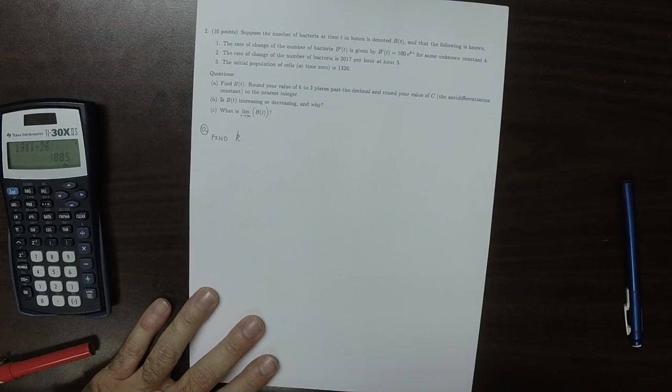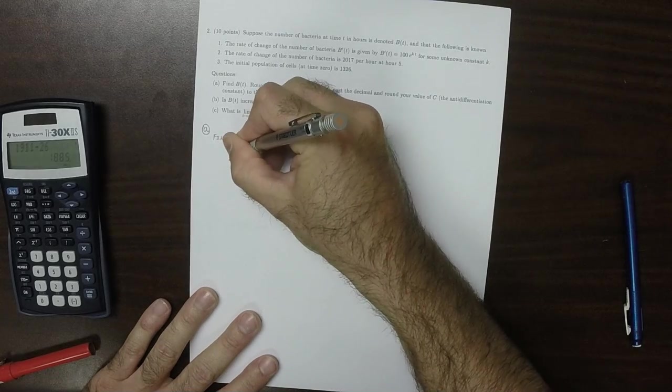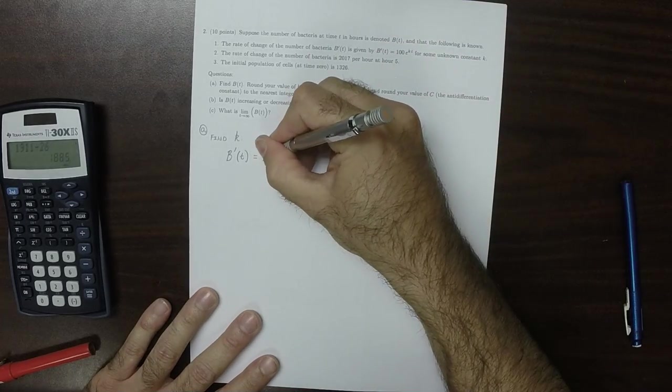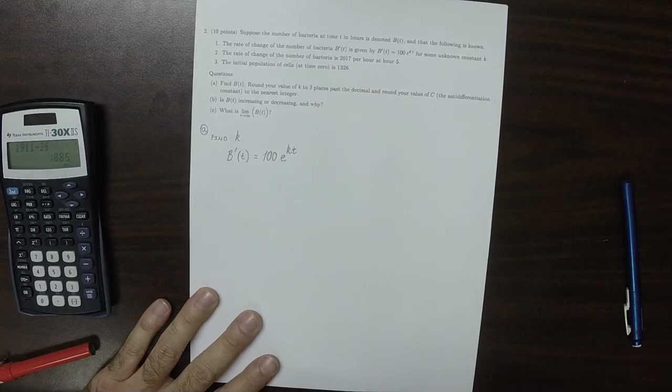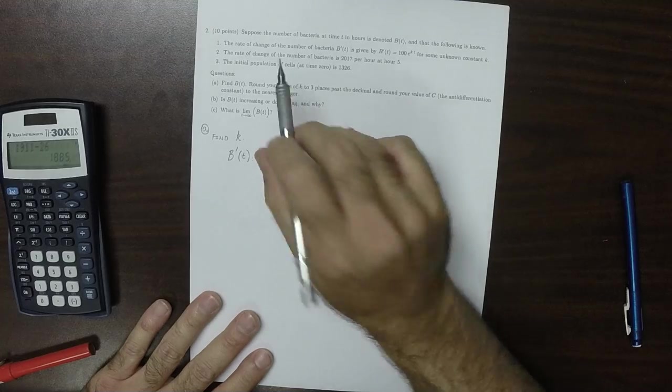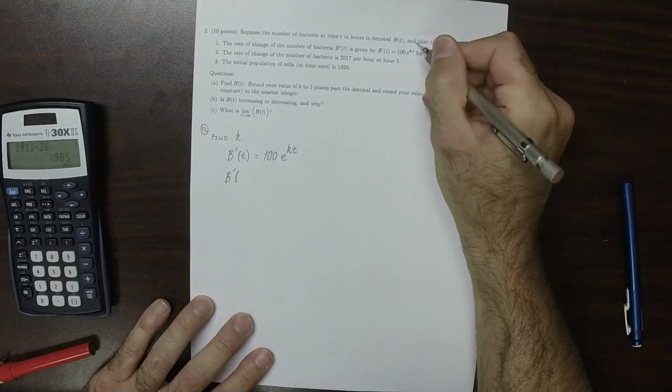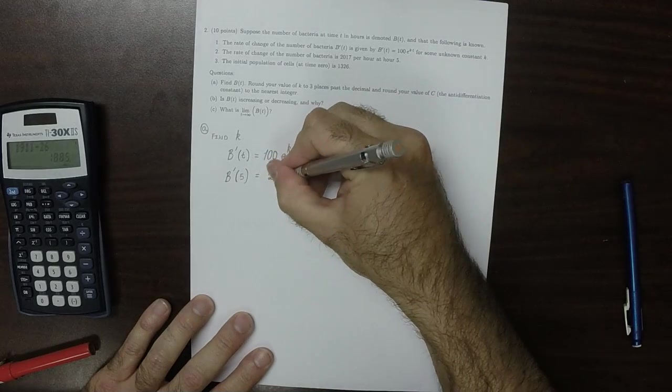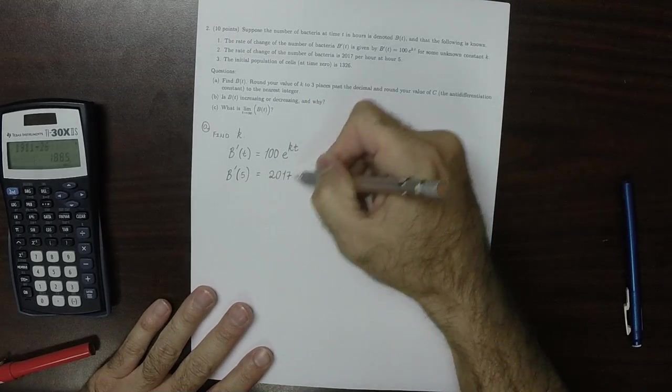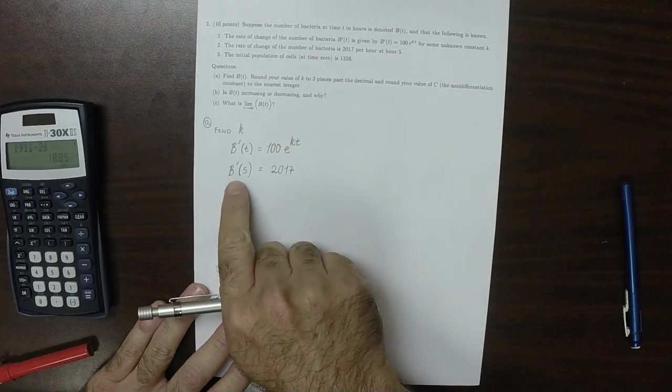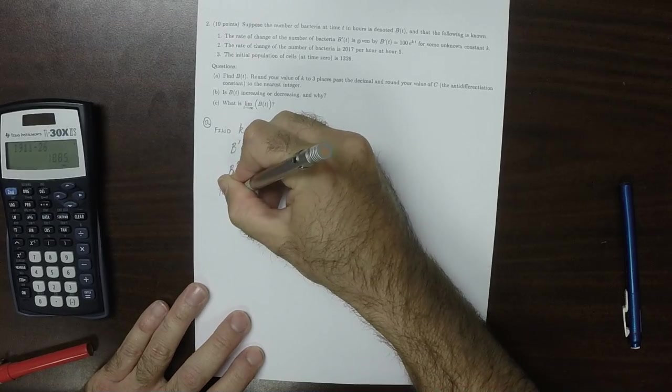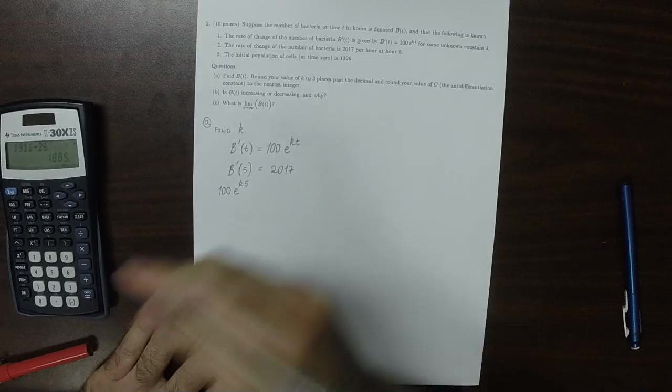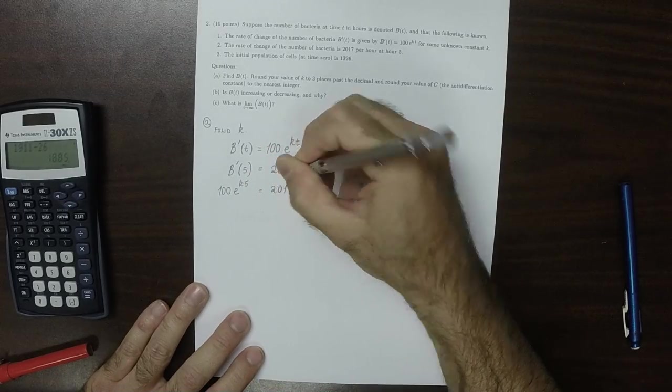So the two things we know about k are we know that the derivative of b at t is 100e^(kt). And we know that the derivative evaluated at 5 is 2017. So then we can combine those two to figure out if we replace this with that. That'd be 100 exponential of k times 5 equal to 2017. So now we just need to solve for k.